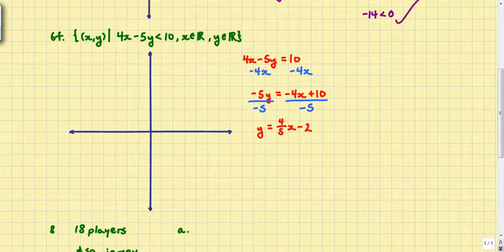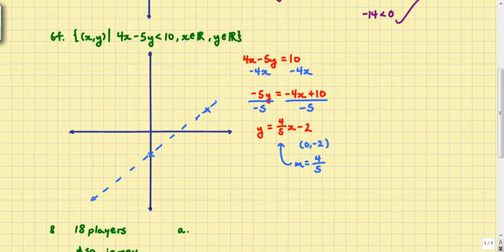Unlike the previous question, we have a very nice y intercept. I know that the point (0, negative 2) will be on our line. I know the slope is 4 fifths. So I'm going to go up 4 spaces, 1, 2, 3, 4, and run 5, 1, 2, 3, 4, 5, to draw my second point. Afterwards, I'm going to draw a straight line through these two points. This time we also have a dashed line because this is also a less than and not equal to inequality.